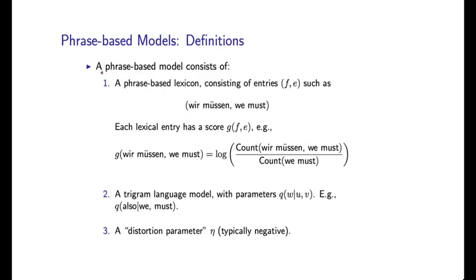Throughout this lecture, I'm going to consider a phrase-based model to consist of three things. First, a phrase-based lexicon consisting of F,e pairs, exactly as I just showed you. The second thing we're going to make use of is a trigram language model for the language which we're trying to translate into. Throughout this lecture, I'll assume we're trying to translate from German into English.